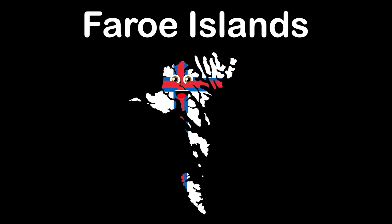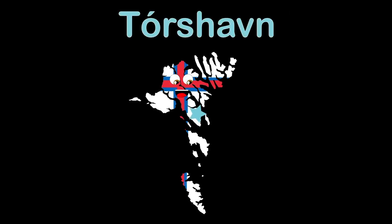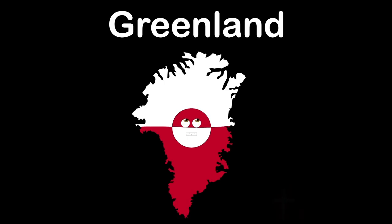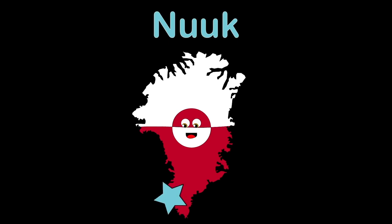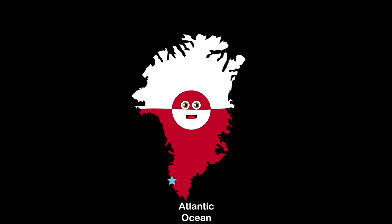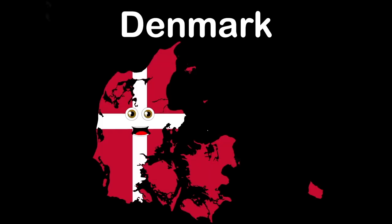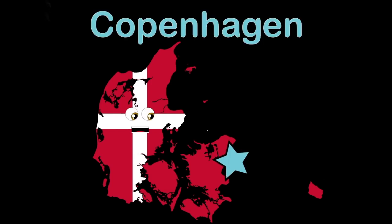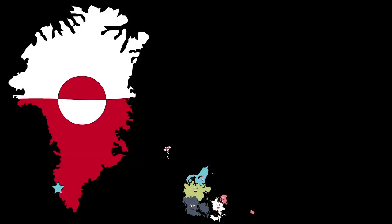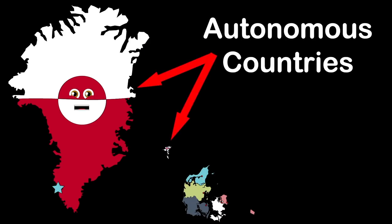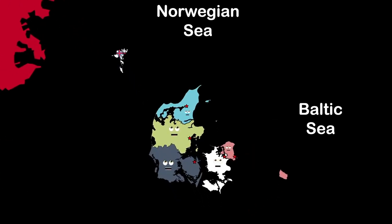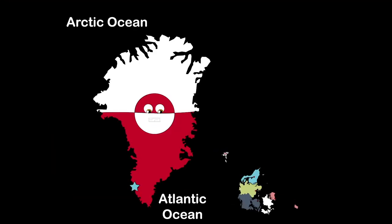I'm the Faroe Islands, an autonomous country within the Kingdom of Denmark in the Atlantic Ocean. My capital is Tórshavn. I am Greenland, an autonomous country within the Kingdom of Denmark — the world's largest island. Nuuk is the name of my capital. I am the southern Scandinavian country named Denmark — my capital is Copenhagen.